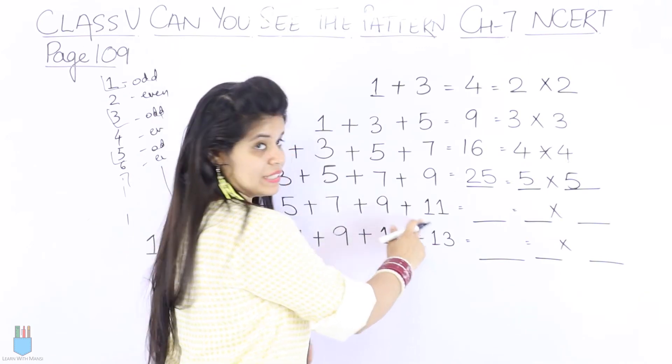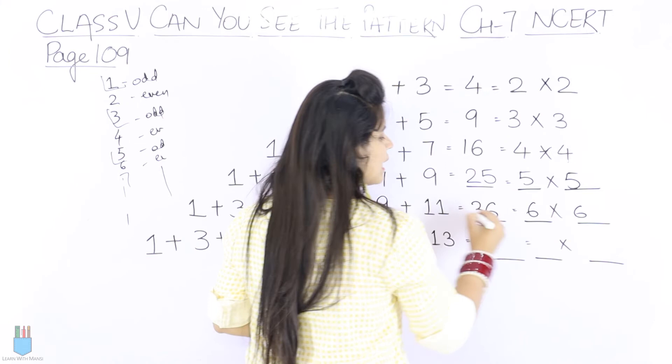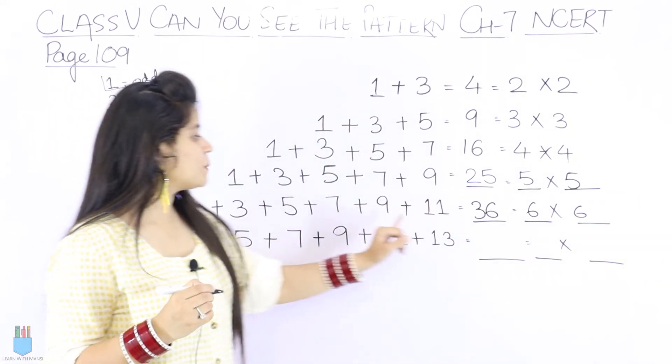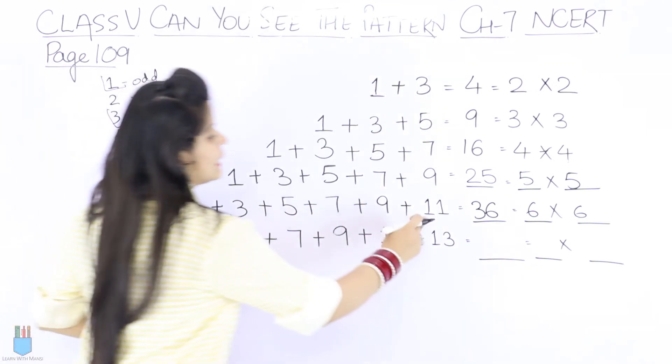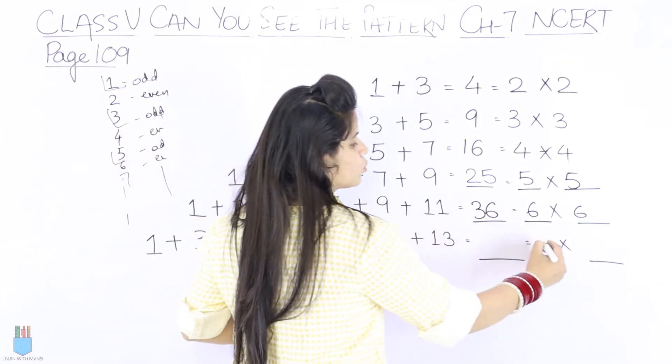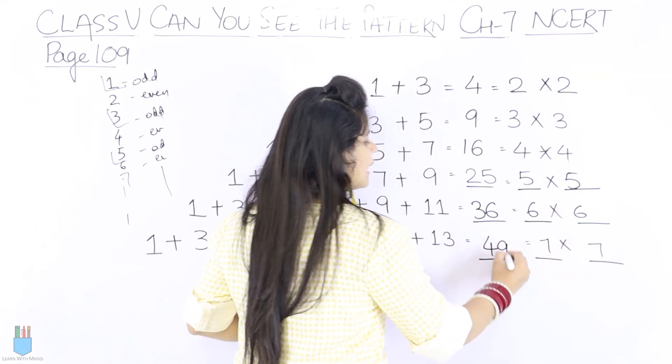After 9, next odd number is 11. What should happen? 6 into 6, which is 36. When you do this, it will be 36. We have seen the pattern here. Similarly, after 11, what should happen? 7 into 7 means 49.